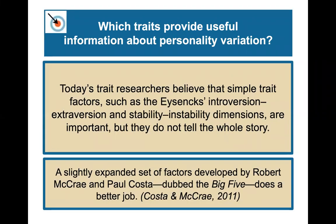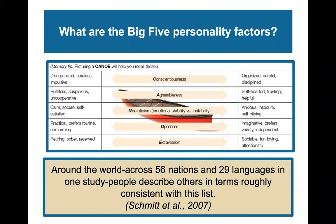Which traits provide useful information about personality variation? Today's trait researchers believe the Eysencks' introversion-extroversion and stability-instability dimensions are still important, but they don't tell the entire story. A slightly expanded set of factors developed by Robert McCrae and Paul Costa, dubbed the Big Five, does a better job according to significant research. You can use the mnemonic CANOE or OCEAN: Conscientiousness, Agreeableness, Neuroticism, Openness, and Extroversion.